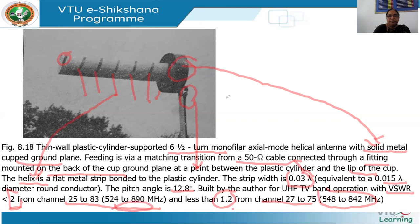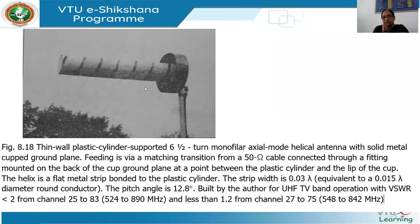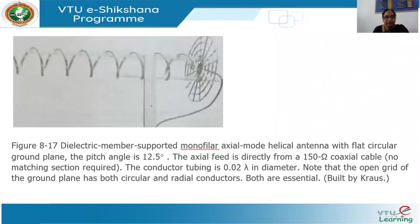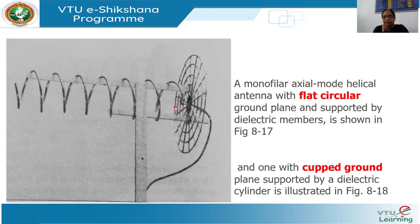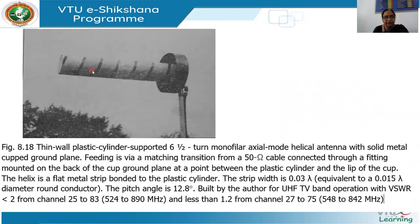Summarizing the two constructed types: the first uses dielectric members for support with a flat ground plane having both circular and radial conductors, and a 150 ohm coaxial cable requiring no matching section. The second uses a cupped ground plane with a dielectric cylinder on which the helix is wound, connected to a 50 ohm coaxial cable — requiring approximately half a turn at the end as a matching section — and gives better VSWR performance.